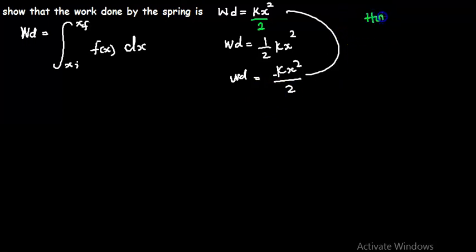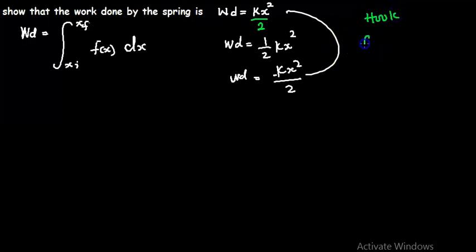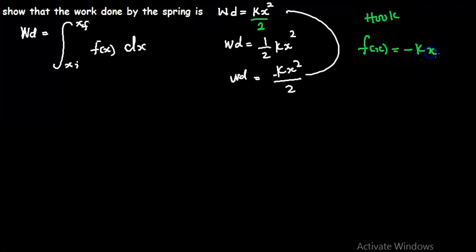According to Hooke's law, this is going to be mathematically expressed as f of x — since we said it's going to be in the negative direction, this is going to be negative kx. Here, k is the spring constant and x is the displacement from the equilibrium position.